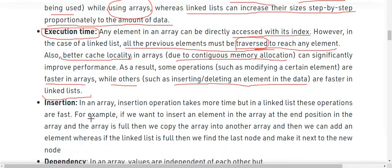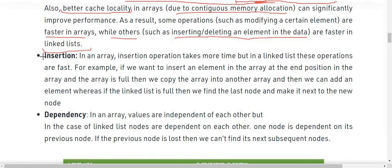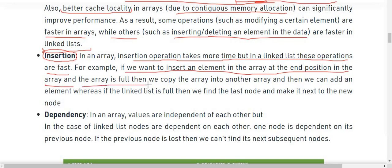Next major difference is insertion. In an array, insertion operations take more time, but in linked list these operations are fast. For example, if we want to insert an element in an array at the end position when the array is full, then we copy the array into another array then add an element. When the linked list is full, we find the last node and make the next node point to the new node.